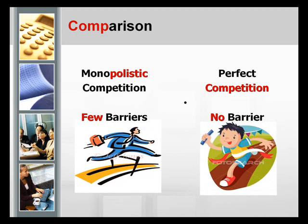The next comparison is about barriers to entry. Actually, monopolistic competition and perfect competition have similar characteristics regarding barriers to entry, which is free entry and free exit — meaning firms can easily enter and exit the market.